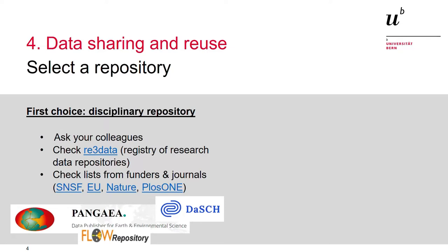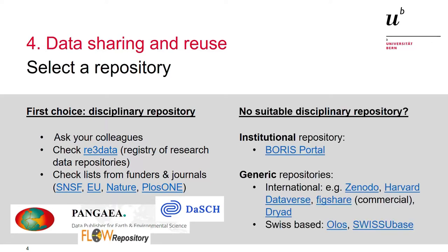A third option is to look at existing lists from research funders or journals. If you could not find a suitable disciplinary repository, or prefer to publish your data on an institutional repository, you can do that. The University of Bern offers its Boris Portal — a platform where you can publish your research data according to the guidelines of the SNSF. The metadata will be checked by our team before publication and we will be happy to help you with any questions regarding data publication on the platform.